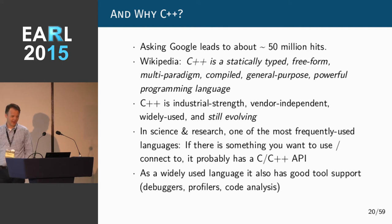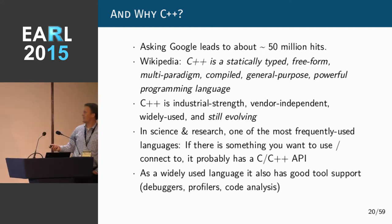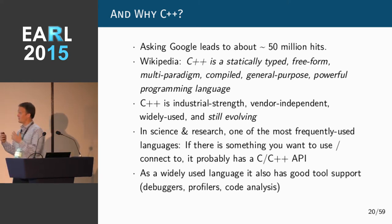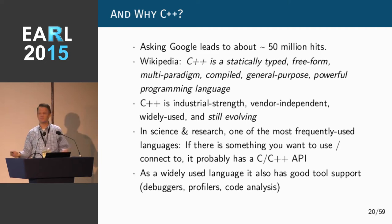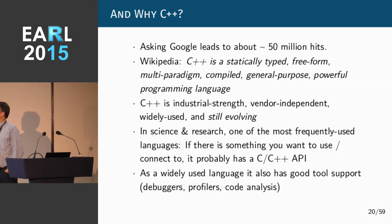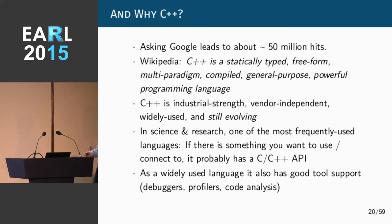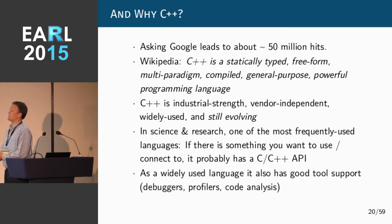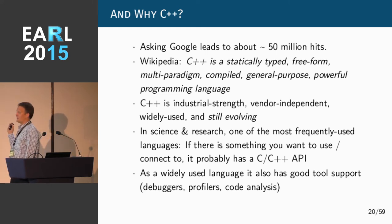As an anecdote, C++ comes from Bell Labs, the same place where R comes from. They initially wrote it as a better C to deal with very large code systems for the telephone system - 100,000 lines of code was a benchmark and they felt they couldn't do that with plain C anymore. It's everywhere, industrial strength, not tied to a particular firm - unlike Java which hangs with Oracle, or Go with Google. Widely used and still evolving.